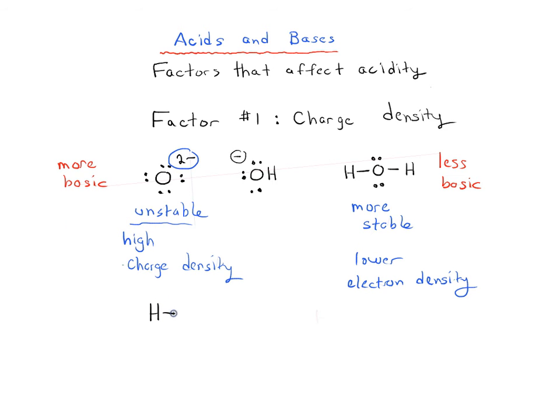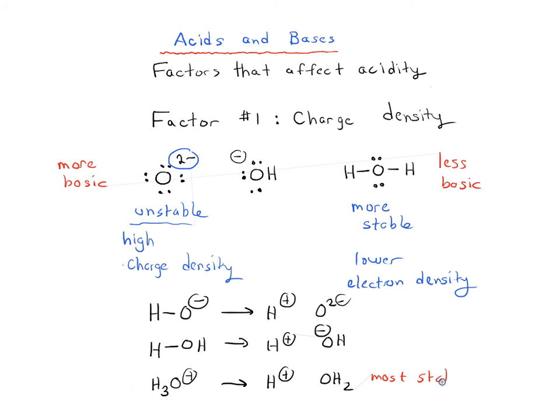And again, thinking about the acidity of each of these species. So if we have HO minus giving us H plus and O2 minus, comparing to water, which would give us H plus and OH minus, and if we compare H3O plus giving us H plus and water. Of all of these three things, we said that the water was the most stable and O2 minus is the least stable. So that means that this is going to be the strongest acid and this is going to be the weakest acid.